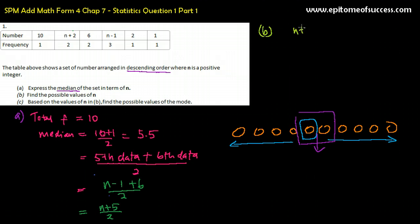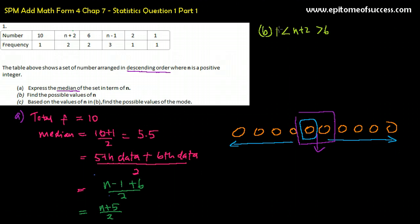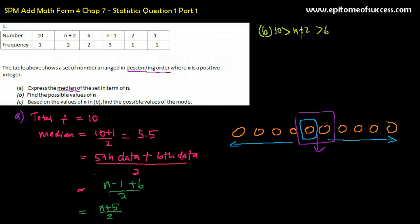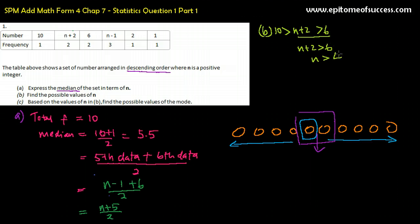N plus 2 must be between 6 and 10. Let's do the first one: N plus 2 must be bigger than 6, but it must be smaller than 10. We'll solve them one by one. Starting with the first inequality: N plus 2 is bigger than 6, therefore N has to be bigger than 4.